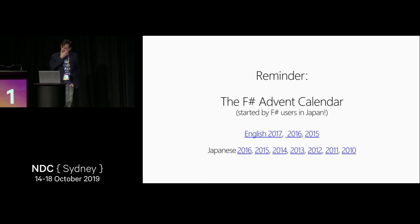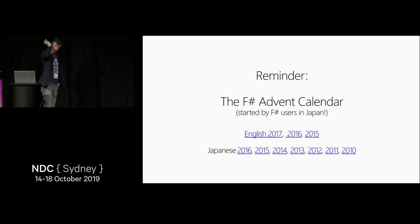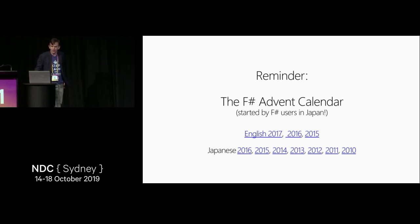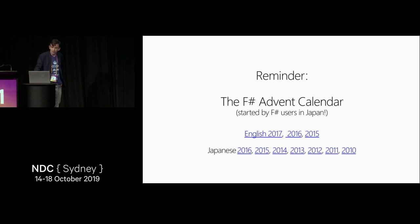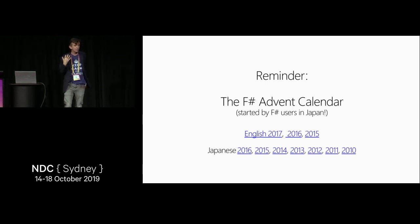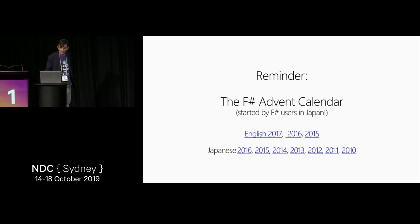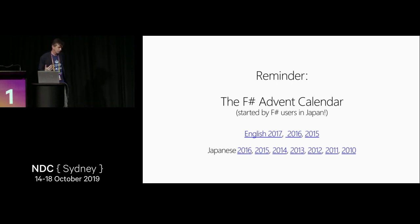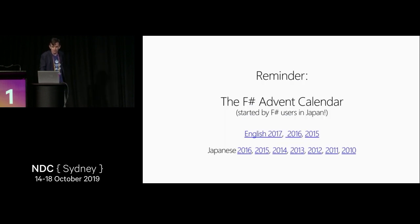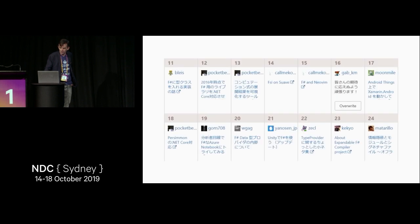One way to look at what F-sharp code I do and don't like is to go to the community. The F-sharp Advent Calendar every year has usually about 50 or 60 entries written by people around the world. Please contribute to the F-sharp Advent Calendar. If you're looking to make the C-sharp community more vibrant, start a C-sharp Advent Calendar as well — that kind of community-driven activism is really missing from the C-sharp world. The Advent Calendar was started by the Japanese F-sharp community back in 2010, and they've done an amazing job.